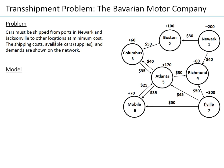This is our first example network flow problem. In this problem, cars must be shipped from ports in Newark and Jacksonville to other locations at minimum cost. The shipping costs, supplies, and demands are shown in the network. Newark has 200 cars of supply, and Jacksonville has 300 cars available.